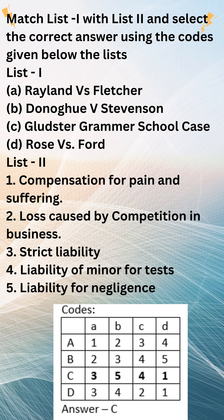Rose v. Ford is a landmark case in English law, decided by the House of Lords in 1937. It concerned the assessment of damages for personal injury in a case where the injured person died shortly after the accident. The deceased, a young woman of 23, was seriously injured in a motor car collision caused by the negligence of the defendant. Her right leg was so badly injured that it had to be amputated two days after the accident. She died two days later as a direct result of the injury.